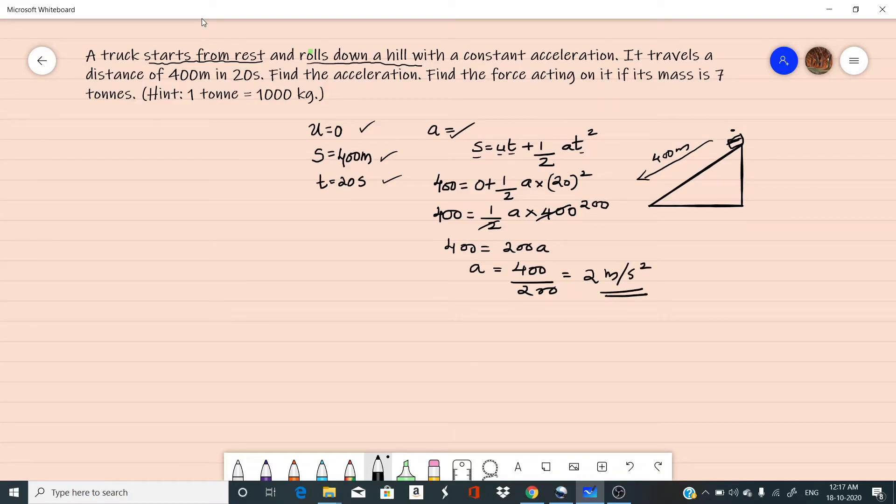Find the force acting on it if its mass is 7 tons. We need to find the force F. We know force equal to mass into acceleration. Here mass is given 7 tons, so mass equal to 7 tons. 1 ton equal to 1000 kilogram, so 7 into 1000 kilogram, that is 7000 kilogram. And acceleration is 2 meters per second square.